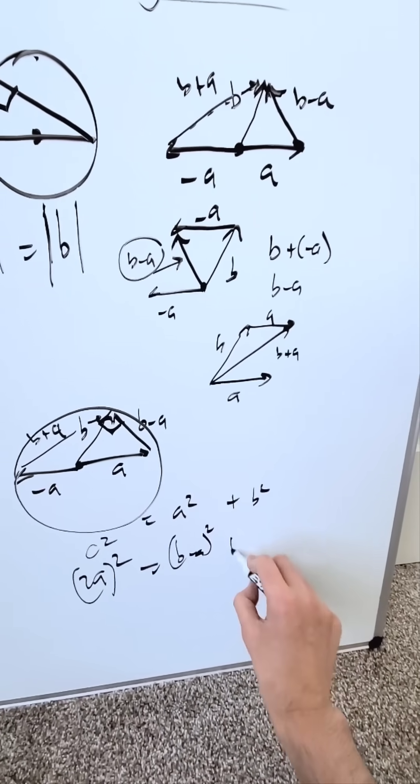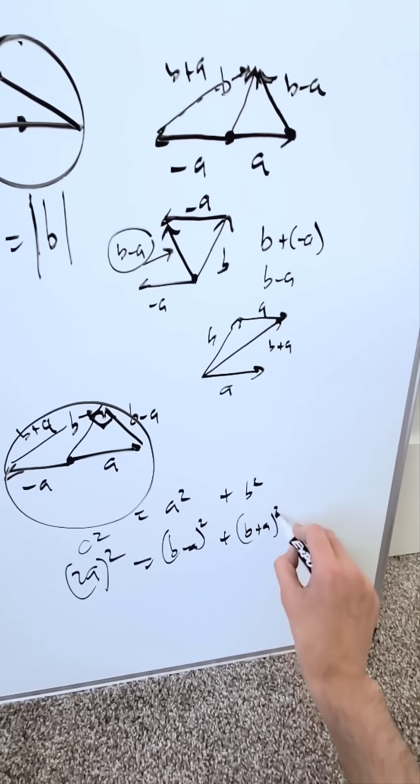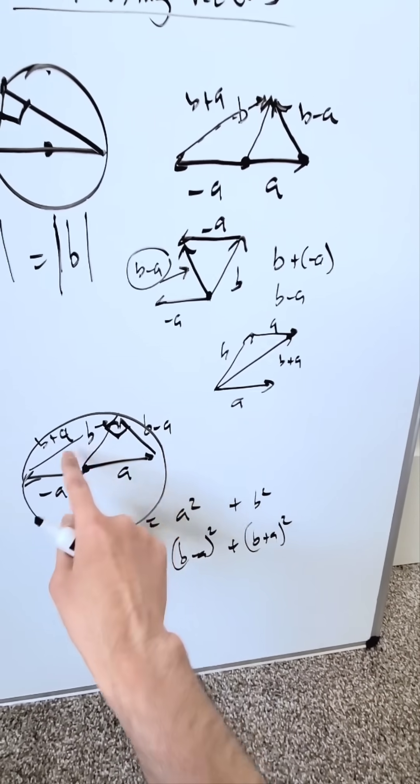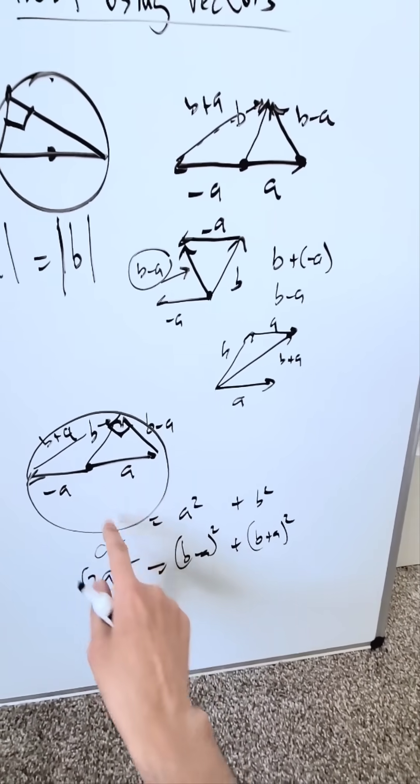That's your formula. I have another leg which is a B plus A whole square. You're seeing these vector additions. B minus A is one leg. B plus A is another leg. I have these two. That's your hypotenuse.